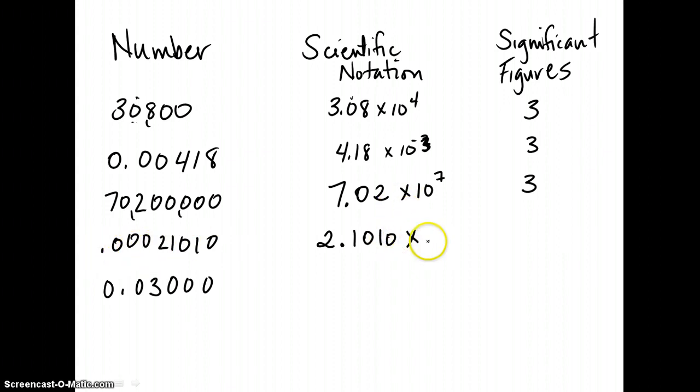And so for that reason, we have 1, 2, 3, 4, 2.1010 to the negative fourth power, and we have a total of five significant figures. And I determined that just by counting this number.